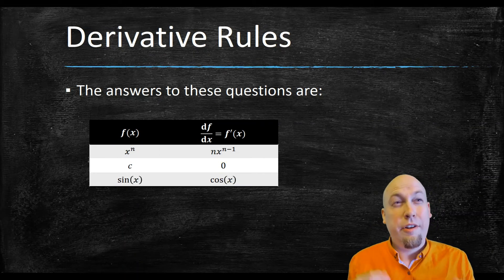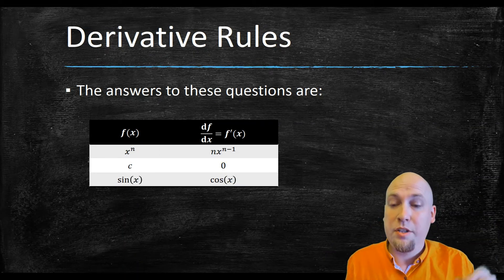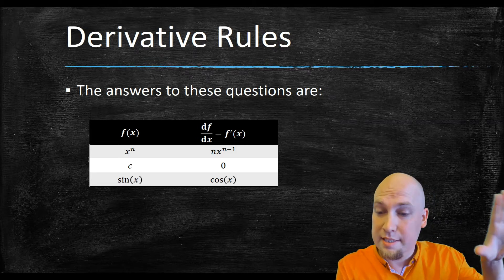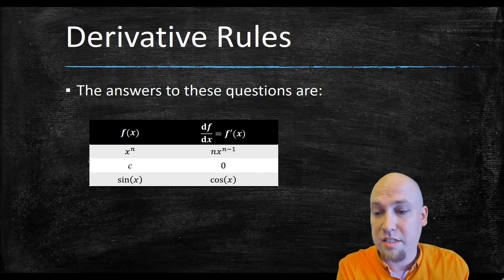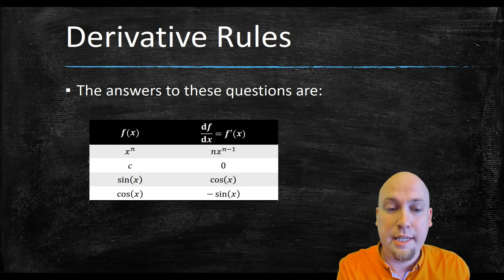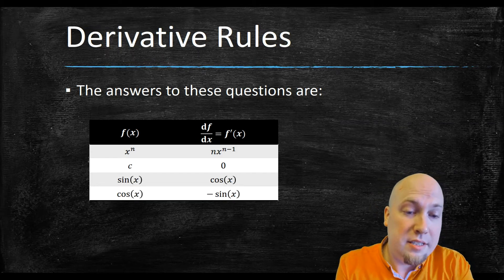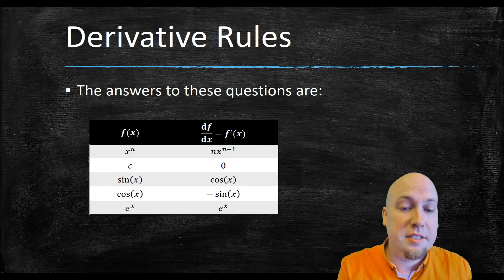What if your function is sine of x? The derivative is cos x. And the derivative of cos of x turns out to be minus sine of x. I'll skip over the justification for now and come back to it in a minute.